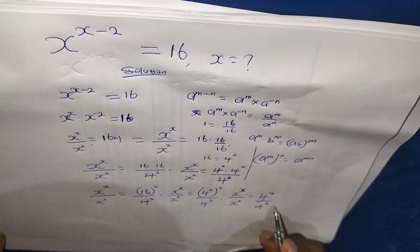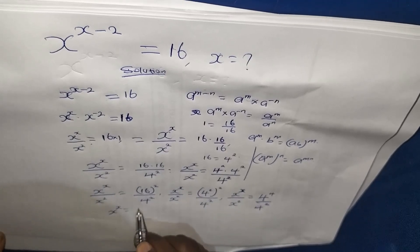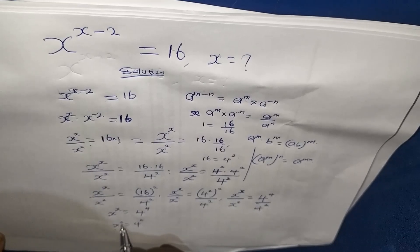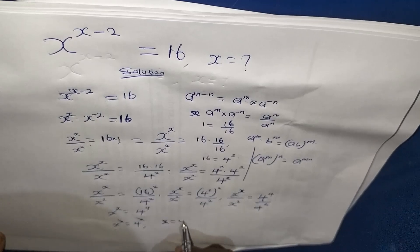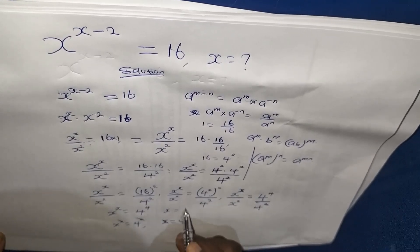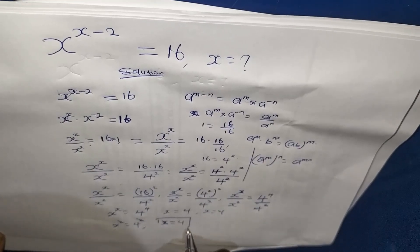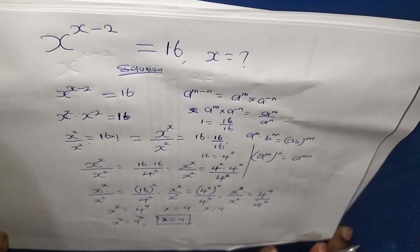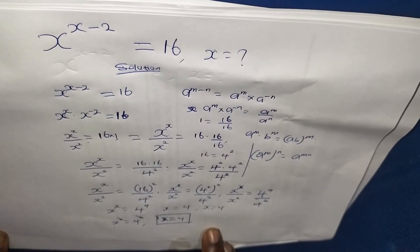You can see we are having x to the power of x over x squared equals 4 to the power of 4 over 4 to the power of 2. By comparison, x to the power of x equals 4 to the power of 4, and x squared equals 4 to the power of 2. So we can cancel and conclude that x is equals to 4. The value of x is 4.